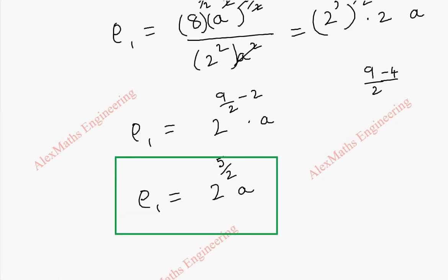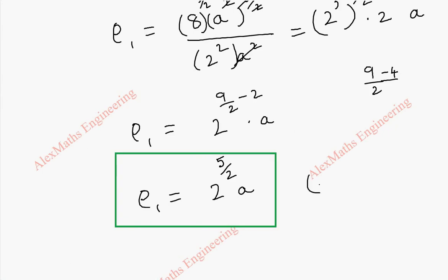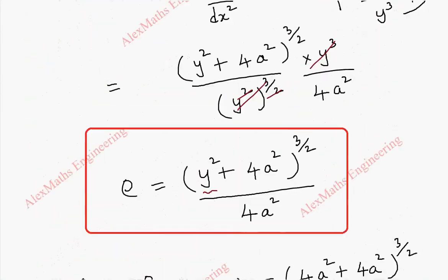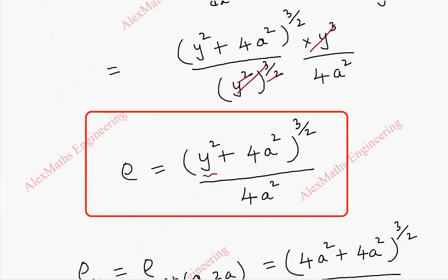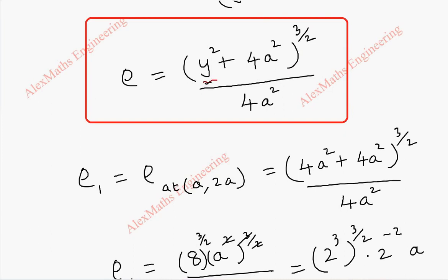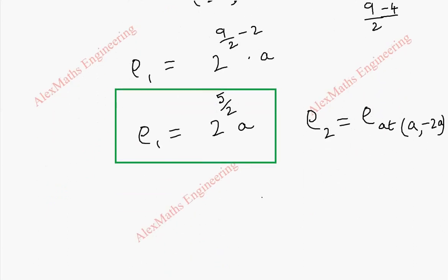In the same way, we find ρ₂ at (a, -2a). Since the formula contains y², substituting y = -2a gives (-2a)² = 4a², which is the same as before. So the same calculation applies, and ρ₂ = 2^(5/2) · a. We have now obtained ρ₁ and ρ₂ separately.